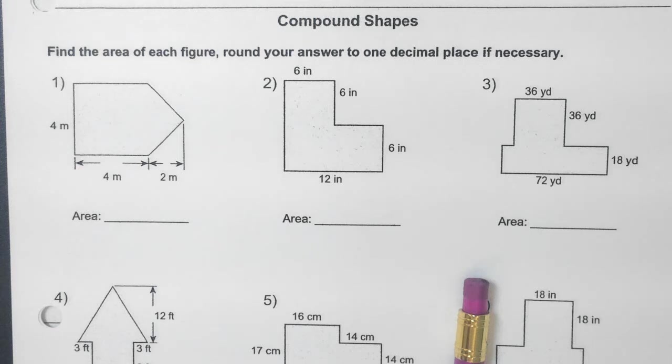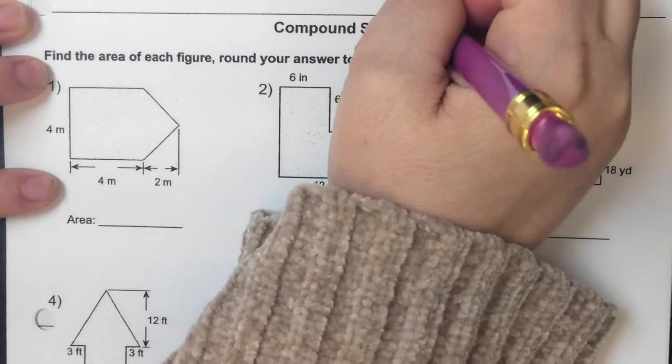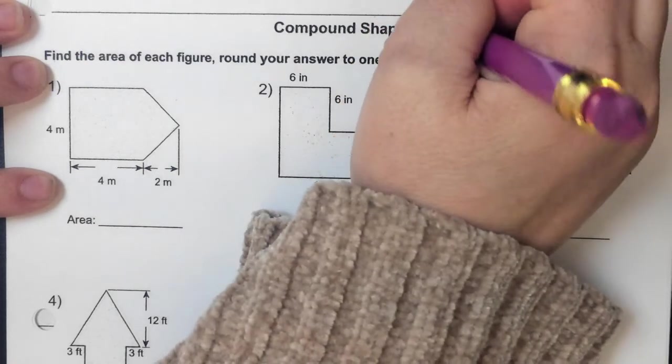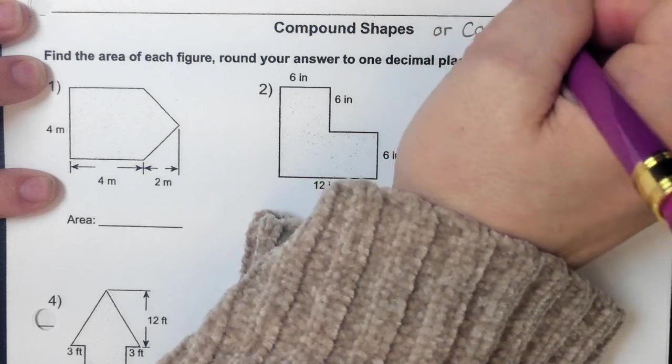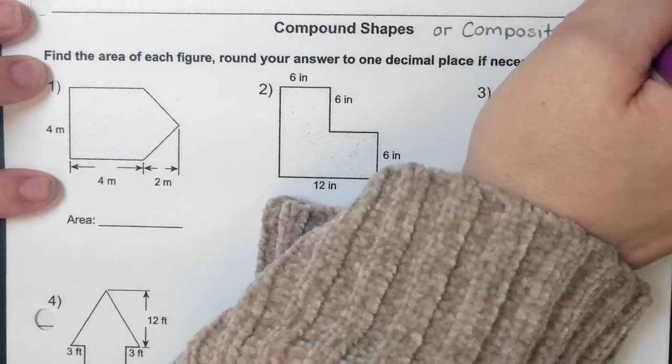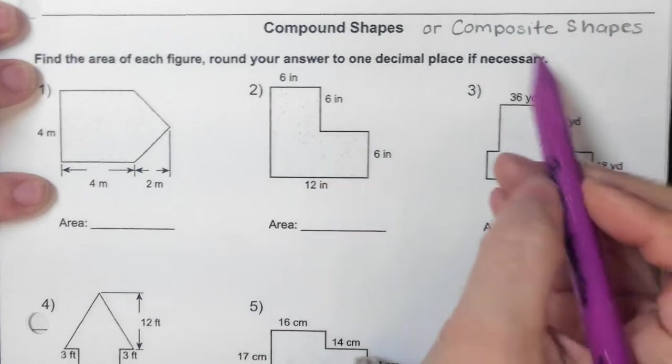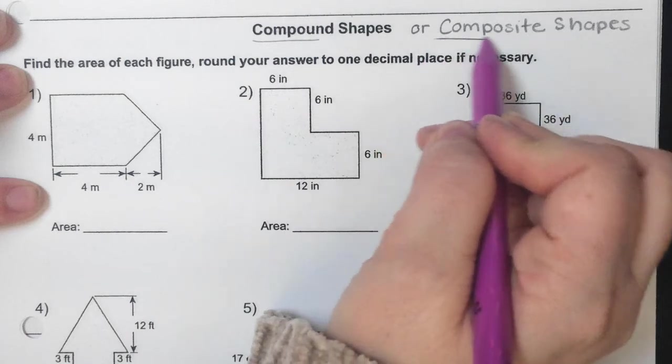A compound shape is where I'm going to have two, and for shapes we can have two or we can have more. But where I'm going to have different complete shapes and I put them together to make one. Another word that could be used to describe these is composite shapes. The word composite shapes, they mean the exact same thing, compound and composite.